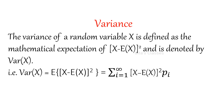Variance. The variance of a random variable capital X is defined as the mathematical expectation of (x minus E of x) whole squared. Variance of x equals E of (x minus E of x) squared, which equals sigma i varies from 1 to infinity of (xi minus E of x) squared times pi. Subtract E of x from x, square it, then find the expectation — that gives you the variance of the random variable x.